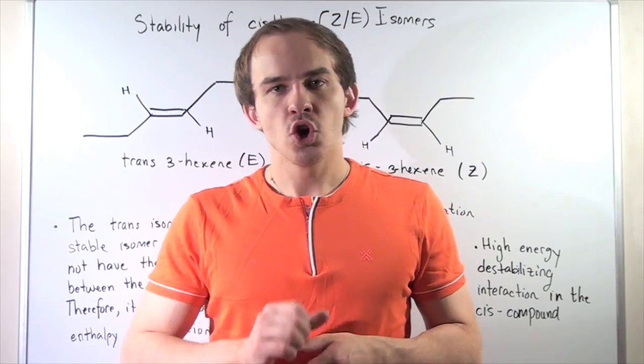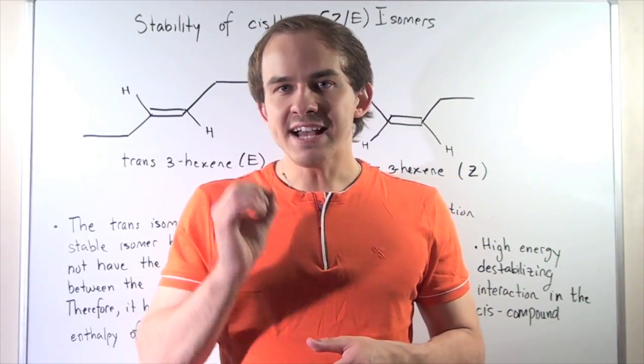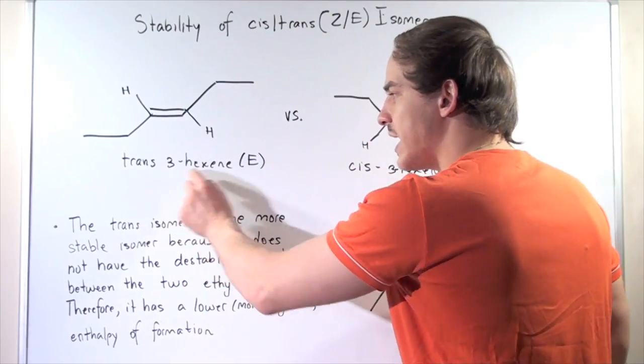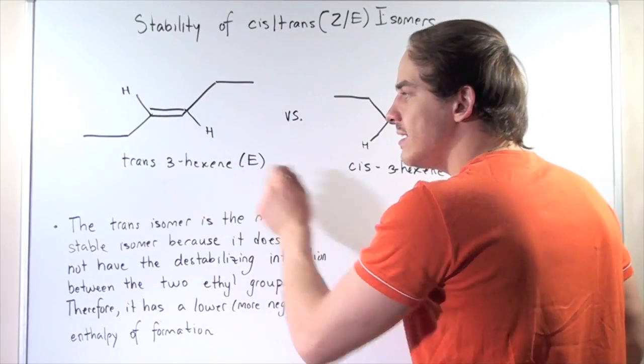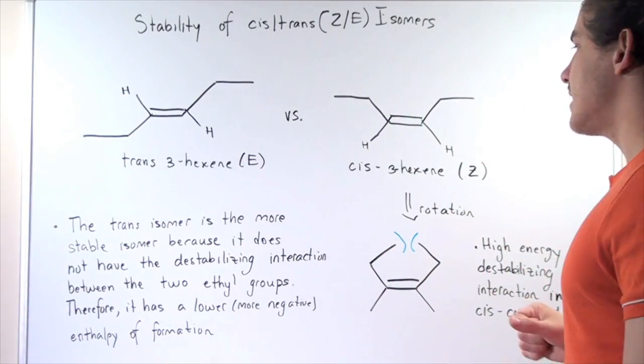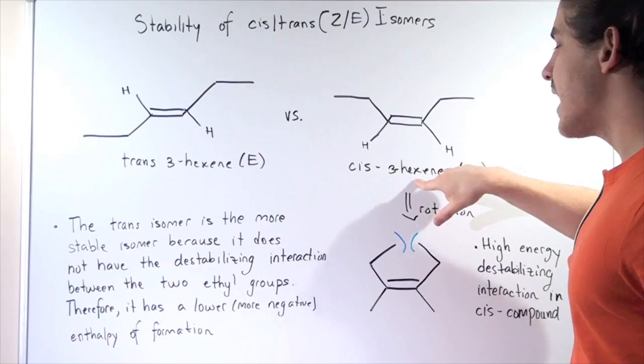So let's suppose we're working with 3-hexene. Now 3-hexene has two types of isomers. It has the trans-3-hexene isomer or the E-3-hexene isomer, and there's also the cis-3-hexene isomer or the Z-3-hexene isomer.